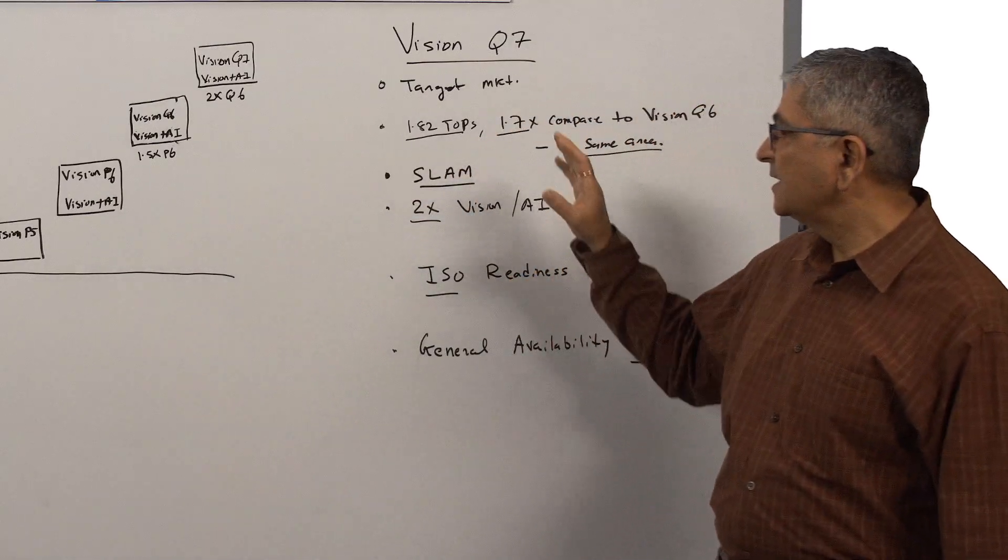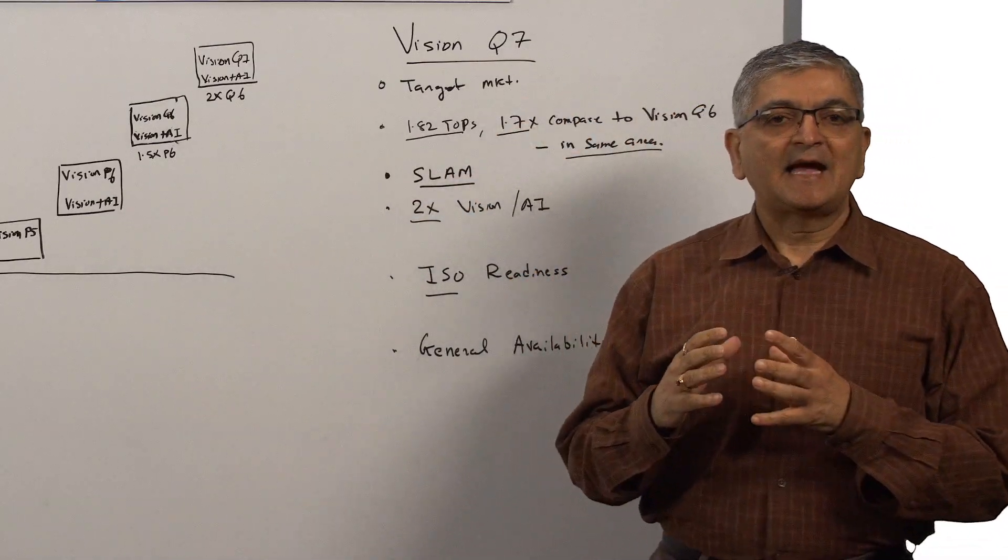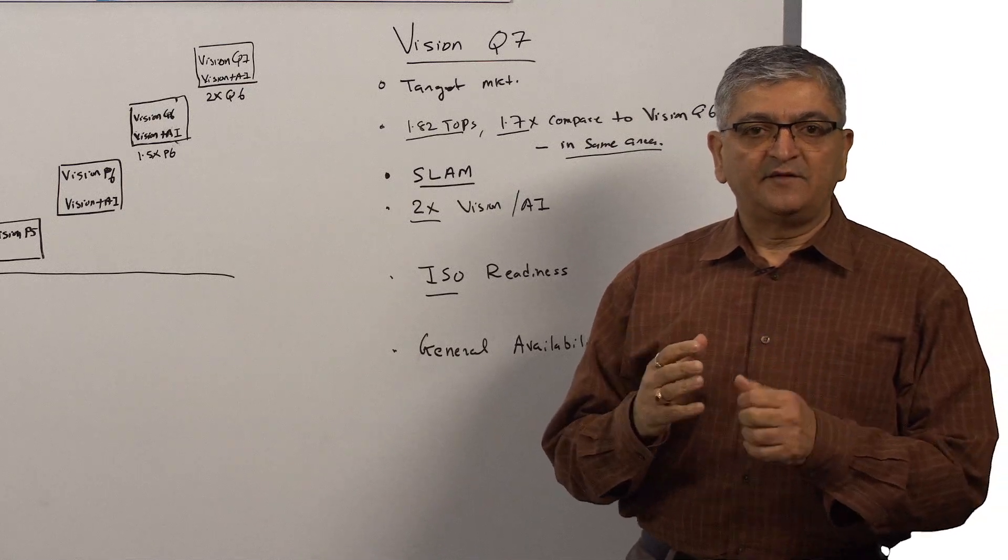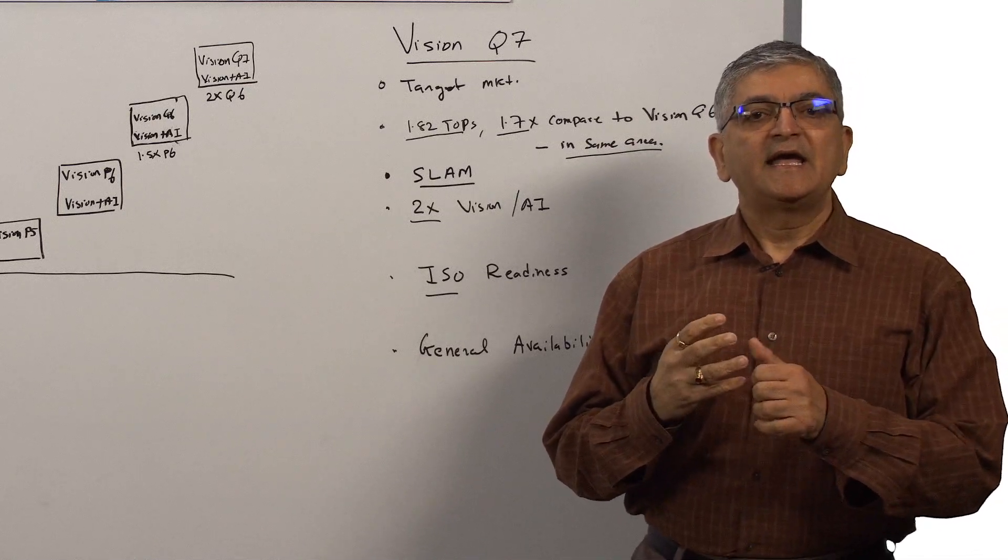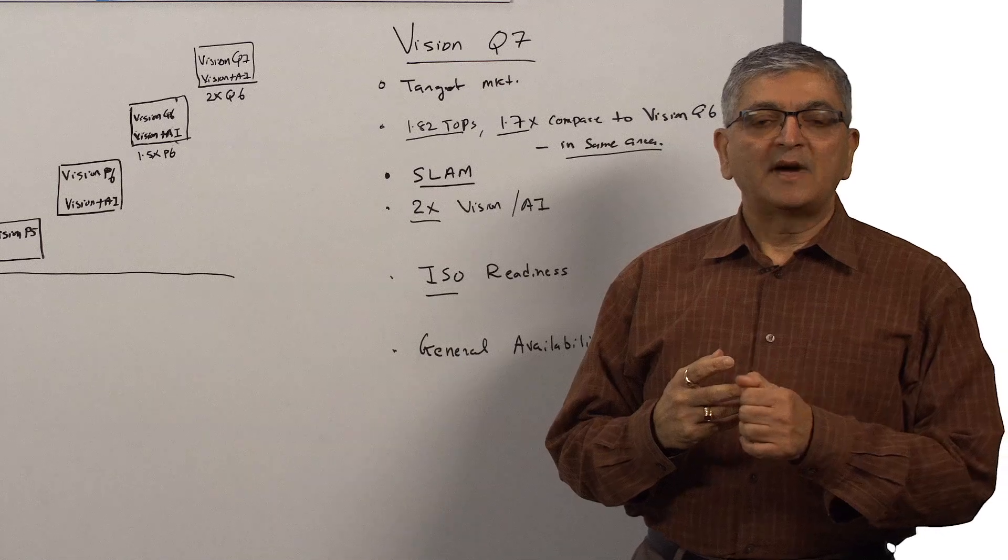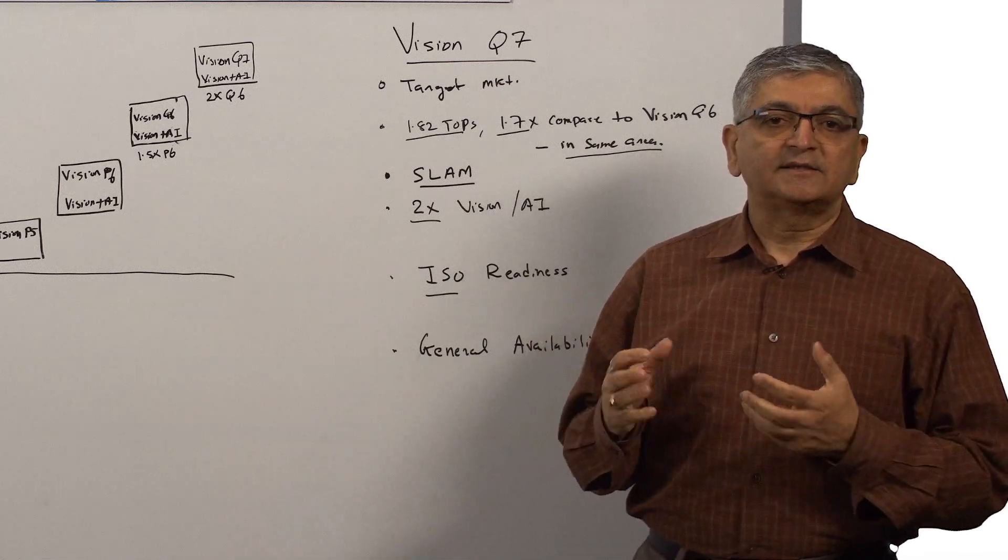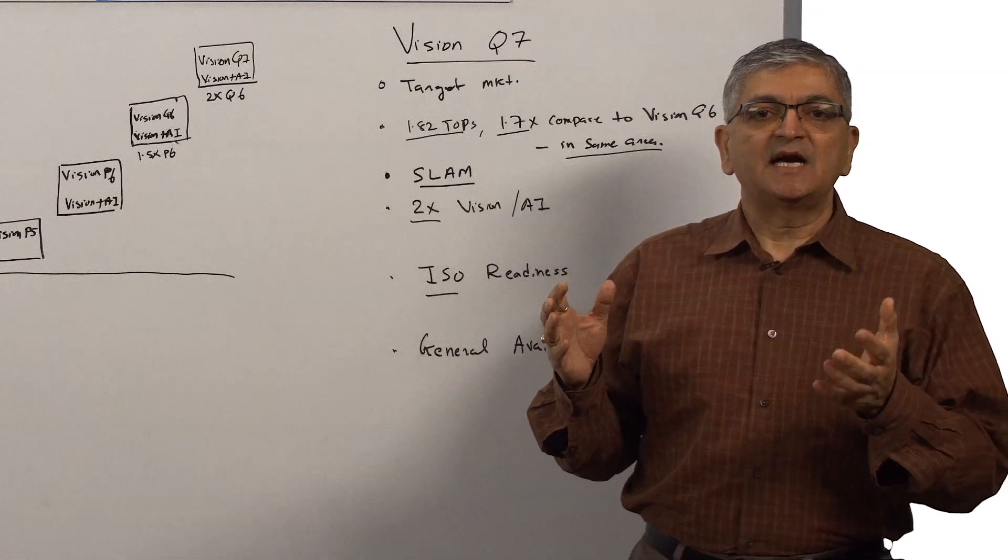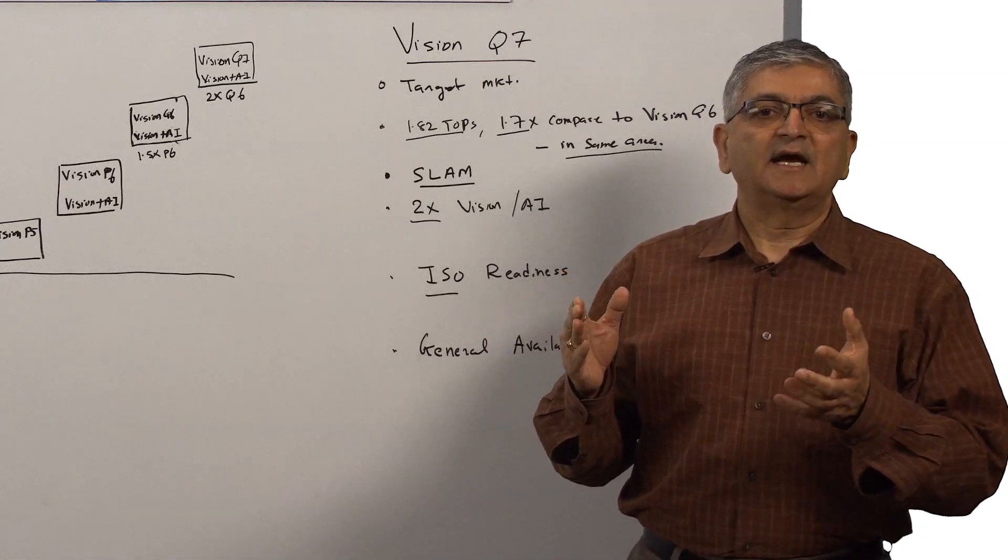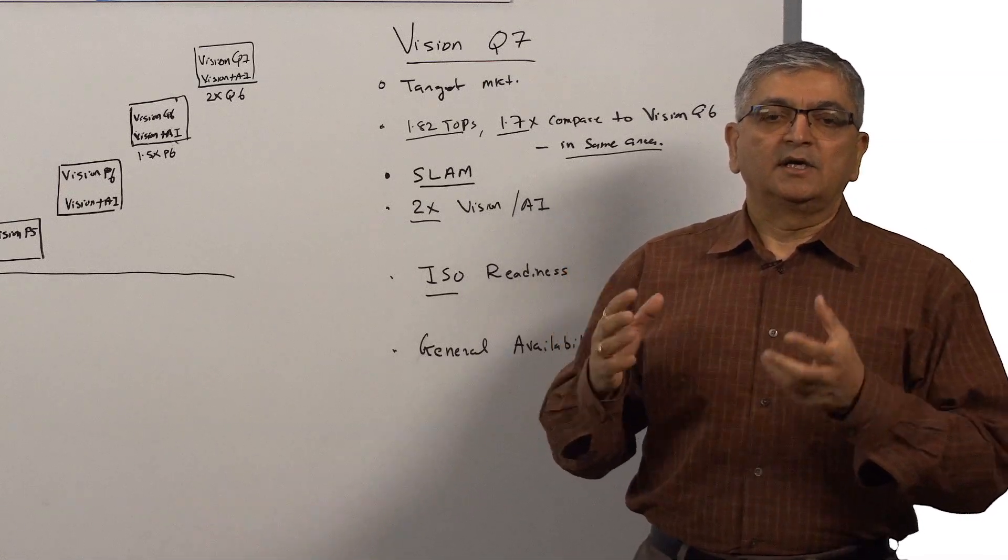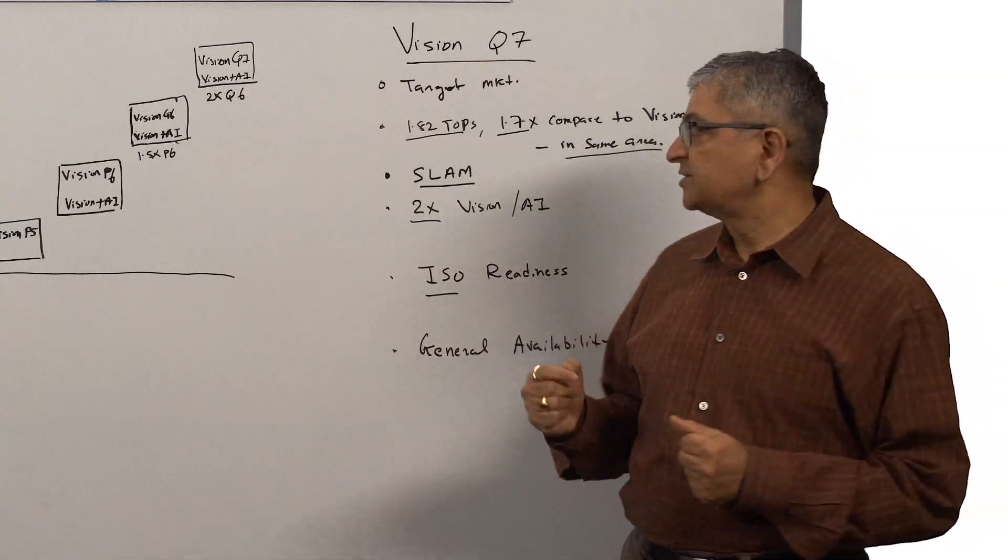Vision Q7 is targeted at various markets, specifically automotive, AR/VR, mobile, surveillance, drone, and robotics. Vision DSPs are used wherever there is a camera to do image processing and vision processing.